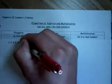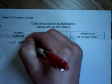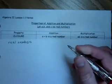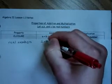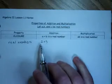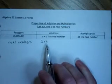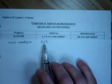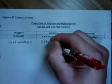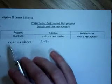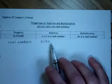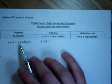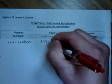For instance, if we use the set of real numbers, then we can use numbers like 2 plus 3. 2 is a real number, 3 is a real number, and we're connecting them with the operation of addition. For this to be closed under the set of real numbers for addition, the result must also be a real number, and that's 5.